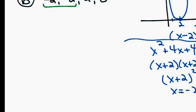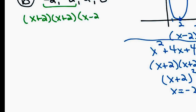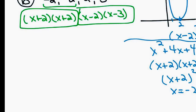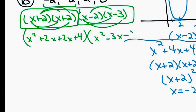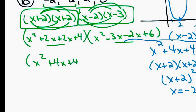You can only multiply two of these binomials together at a time. So I'll multiply x plus 2 times x plus 2, and x minus 2 times x minus 3, then take those two answers and multiply them together. Using FOIL: x plus 2 times x plus 2 gives x squared plus 4x plus 4. The second pair, x minus 2 times x minus 3, gives x squared minus 5x plus 6. Now I need to multiply those two trinomials together.